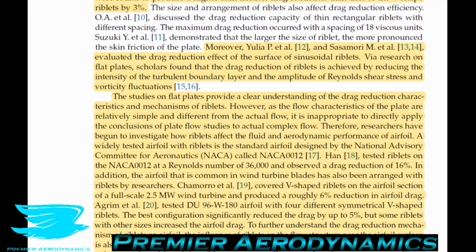Typically, riblets are placed on an airfoil by applying tape with riblet surfaces, or by machining directly onto the surface. You can position them at the leading edge, trailing edge, or maximum thickness location. They can be oriented longitudinally — ridges aligned with the chord — or spanwise, with ridges perpendicular to the free stream velocity. This paper looks at the latter orientation.